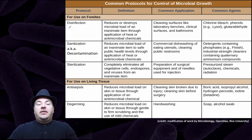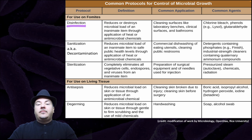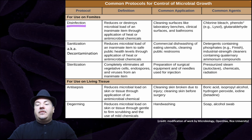So some more details. Disinfection is on an inanimate surface, and it reduces or destroys microbial load of an inanimate item through application of heat or antimicrobial chemicals. Common applications include cleaning surfaces like laboratory benches, clinical surfaces, and bathrooms. Common agents include chlorine bleach, phenols like Lysol, or glutaraldehyde.